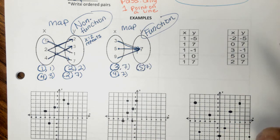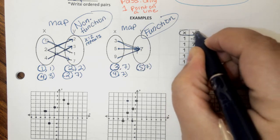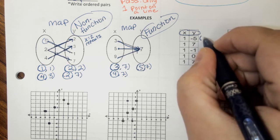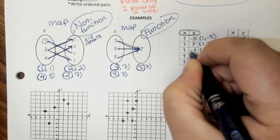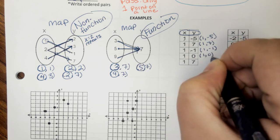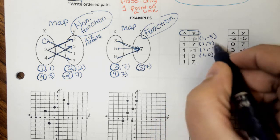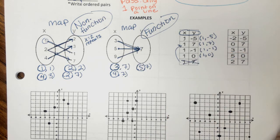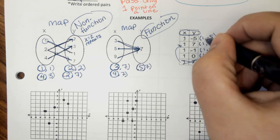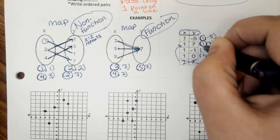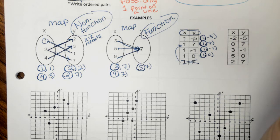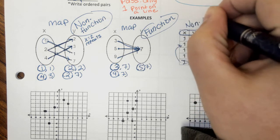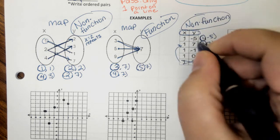In a table, I recommend rewriting your ordered pairs. Here x and y are side by side, so the ordered pairs are: (1, negative 5), (1, 7), (1, negative 1), (1, 0) — and there's another (1,7) but since I've already written that I won't include it again. Now ask yourself: are all of the x values different? Looking at just the x values, they are not all different, so the answer is no, which means this is a non-function because x=1 repeats.